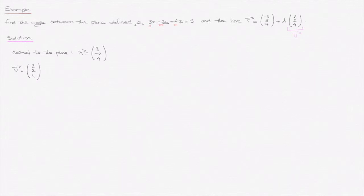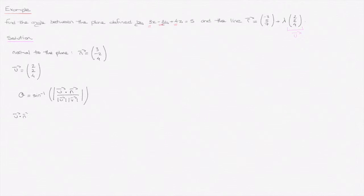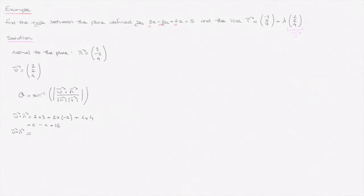We can now state that theta equals arc sin of the absolute value of u dot n, over the product of their respective magnitudes. Let's calculate u dot n: that's 2 times 3, plus 2 times negative 2, plus 4 times 4. That gives us 6 minus 4 plus 16, which means u dot n equals 18.